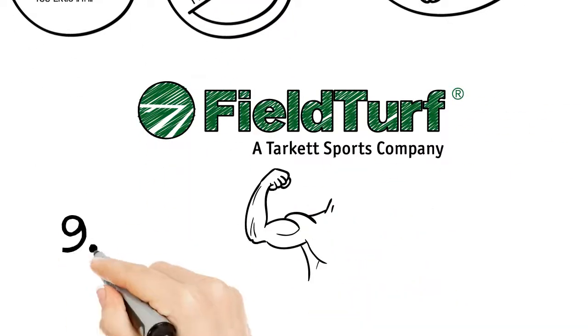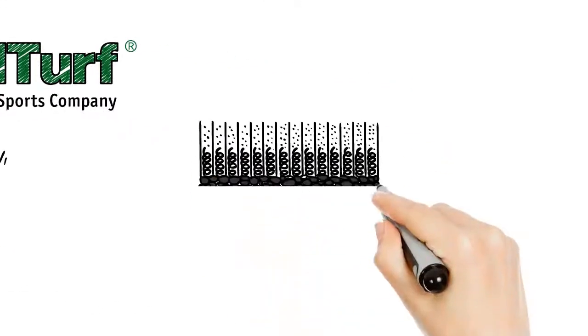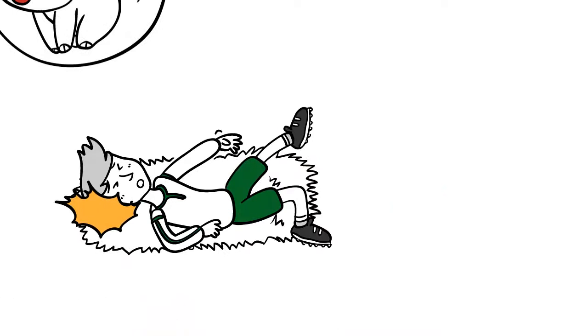FieldTurf's elite system has 9.2 pounds of infill per square foot. The leading thatch system? 2.5 to 3.5 pounds. This light sprinkling of infill can simply bottom out. And with no pad, ouch!